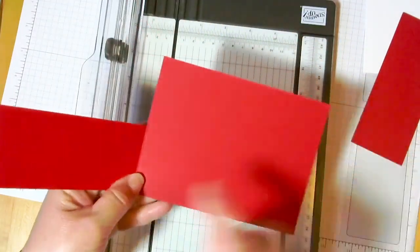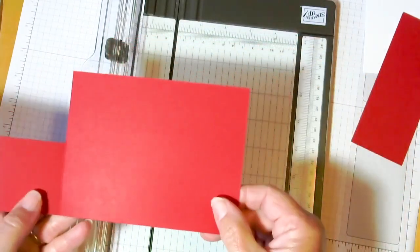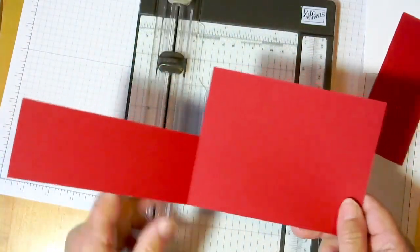So then we have a card front that's just a little flapper, and then our full back.